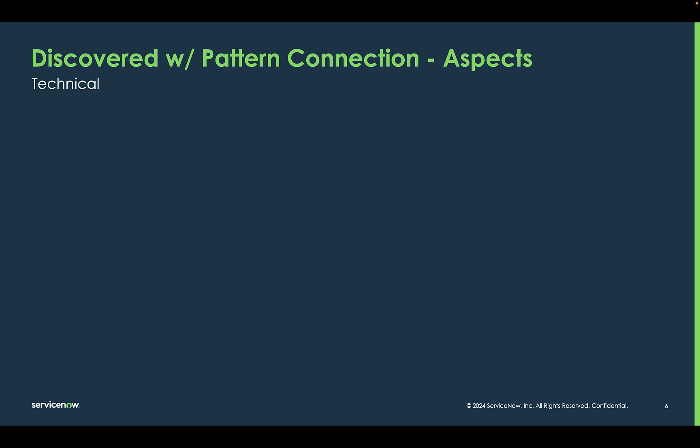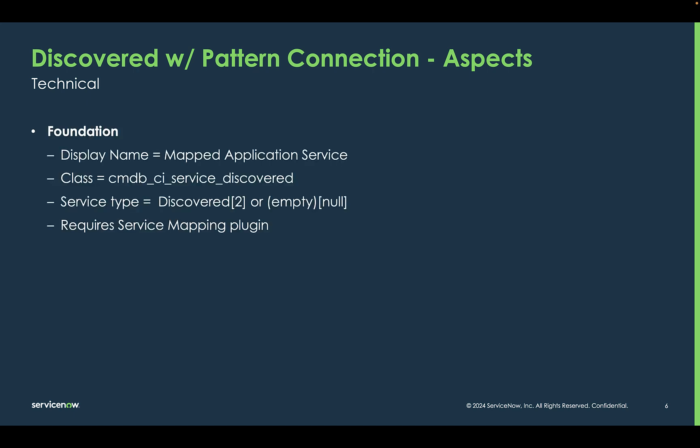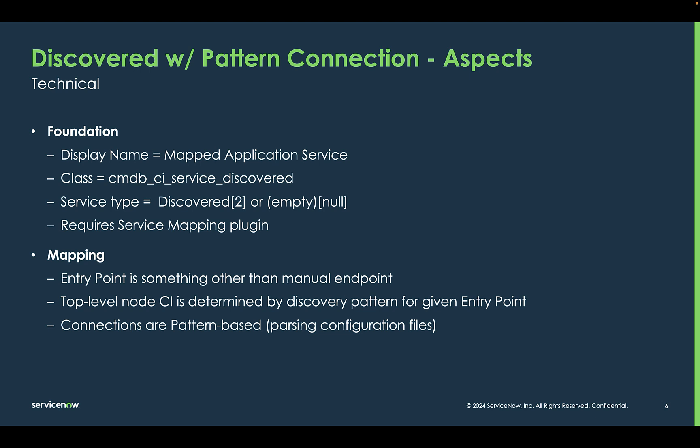Some technical aspects about discovered top-down application services: they are managed and stored in the mapped application service class, CMDB CI Service Discovered, and have a service type of discovered of two, or empty null if they haven't been fully discovered yet. This method of population does require the service mapping plugin. Mapping is done by providing an entry point to a server with a running process — something other than a manual endpoint. The top-level node on the service map is the CI identified by that IP and port determined from the entry point, and connections that are pattern-based leverage real-time data as well as configuration files to find the next hop or connection.